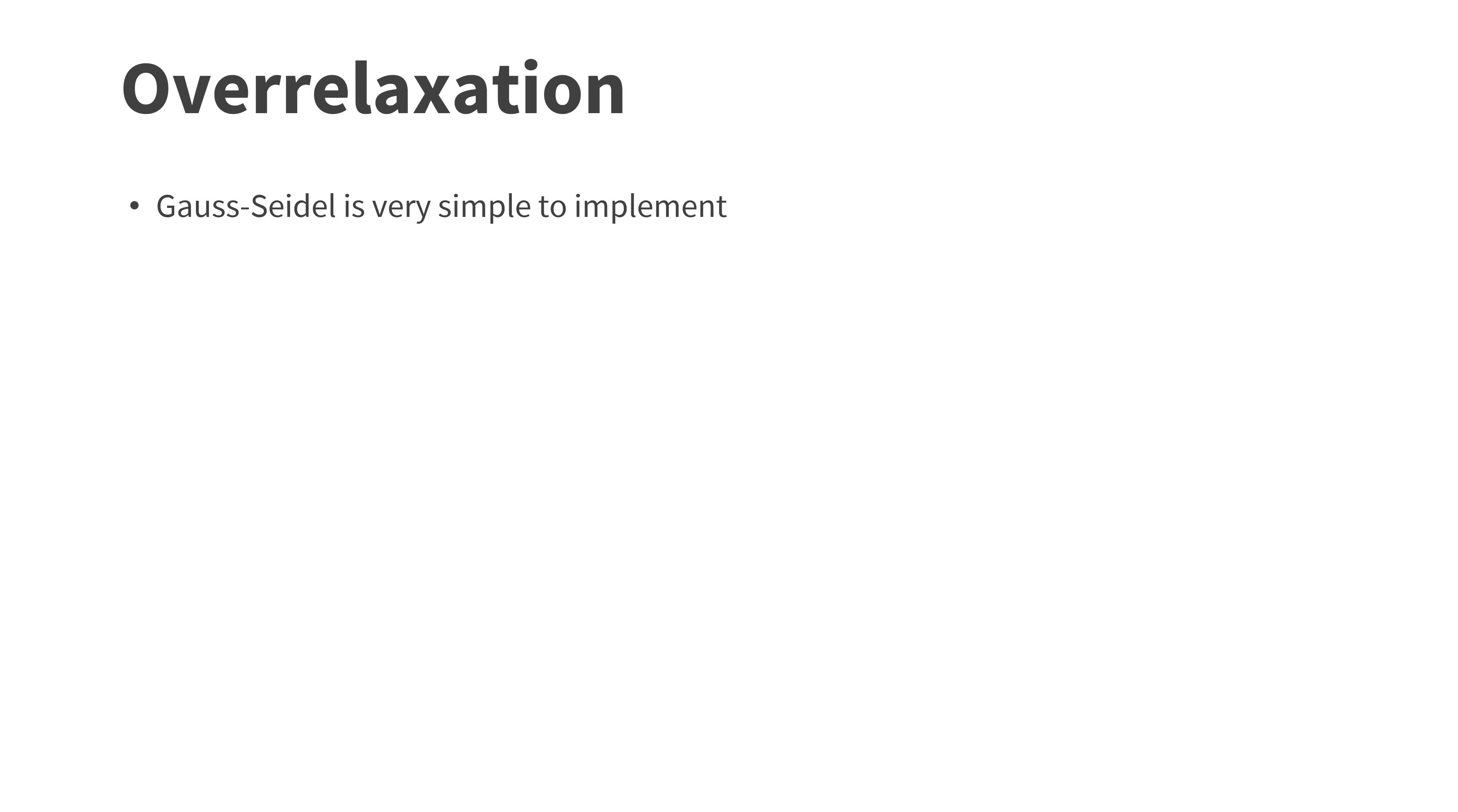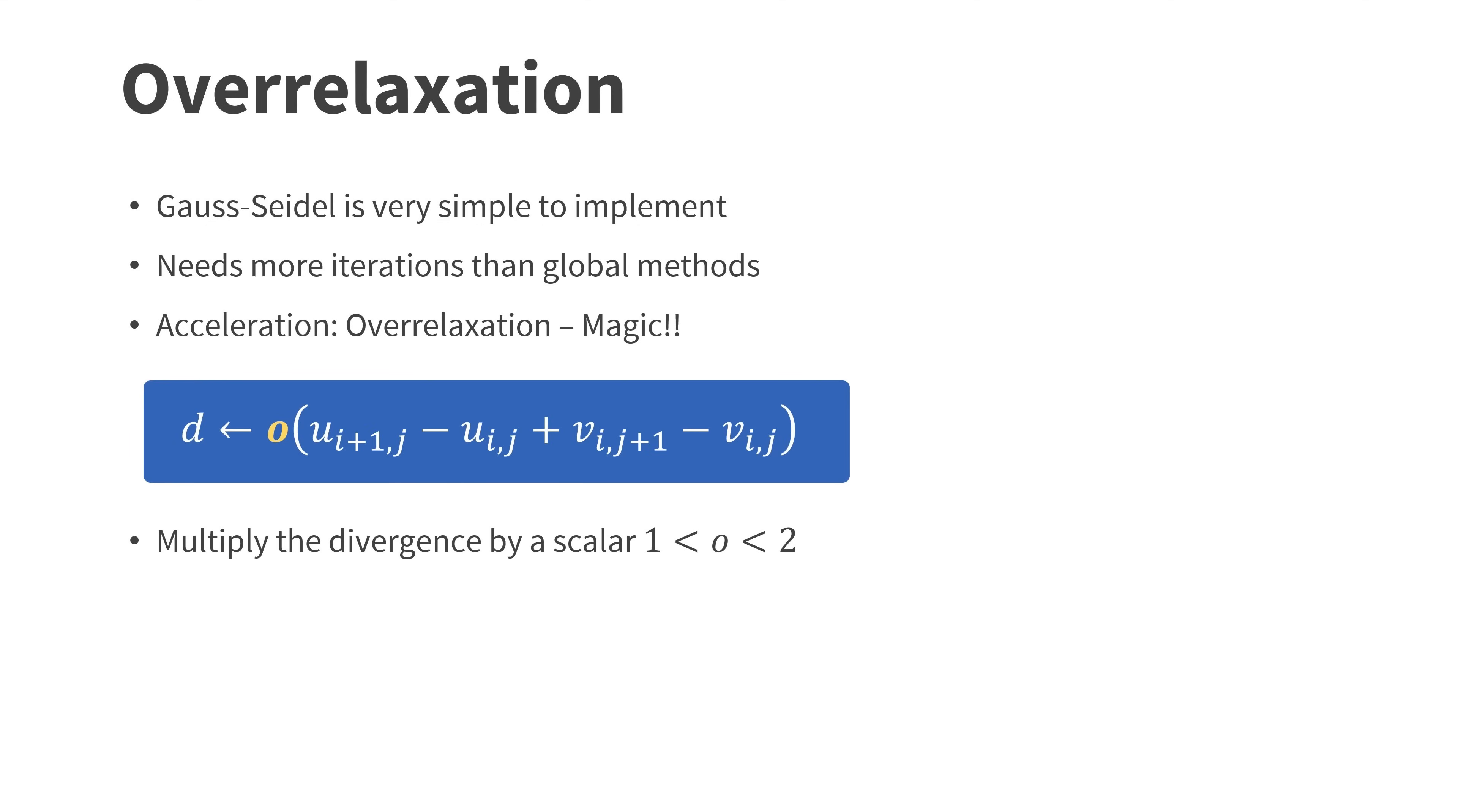As we just saw, Gauss-Seidel is very simple to implement. However it needs more iterations to converge than global methods. Fortunately there is a very simple trick to speed up convergence dramatically. It is called over-relaxation and works like magic. All you have to do is multiply the divergence by constant O between 1 and 2. The bigger the better. I use 1.9 in the code. In the demo I have a checkbox to turn it on and off.